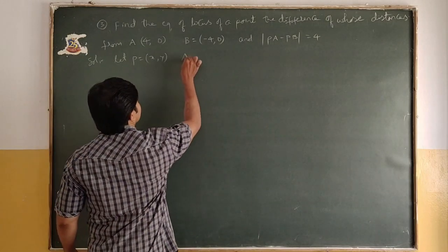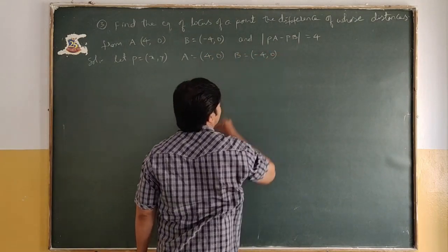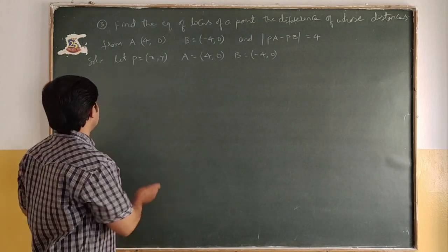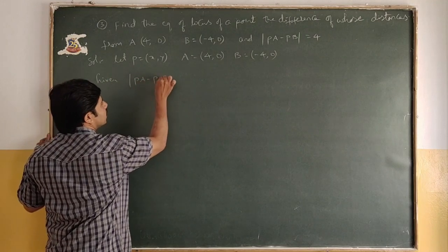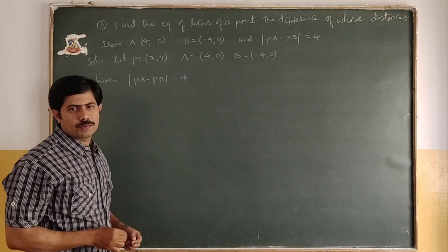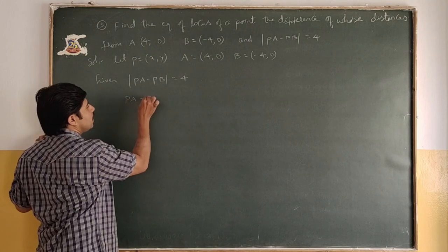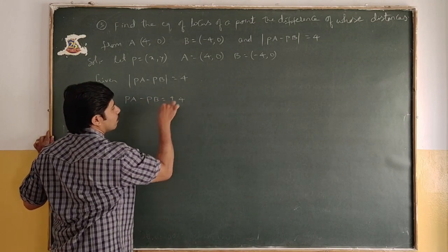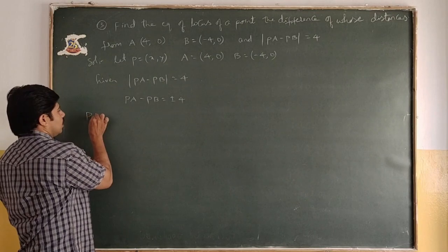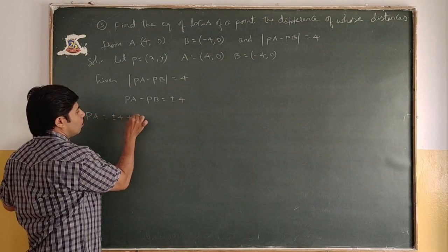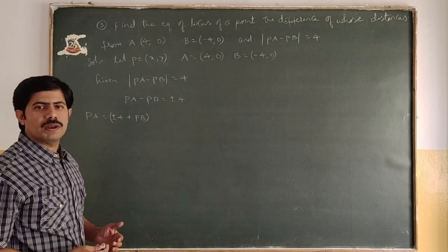So A = (4,0) and B = (-4,0). The condition given is |PA - PB| = 4. When we remove the modulus we write PA - PB = ±4. So PA = ±4 + PB.